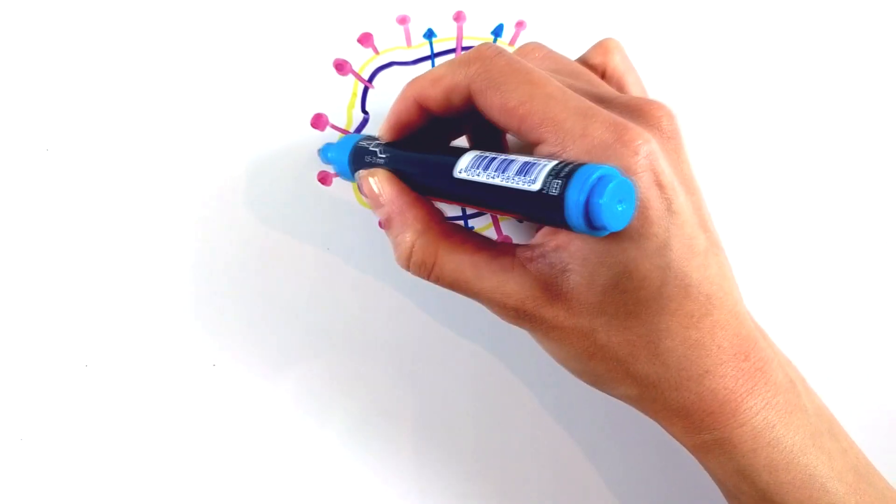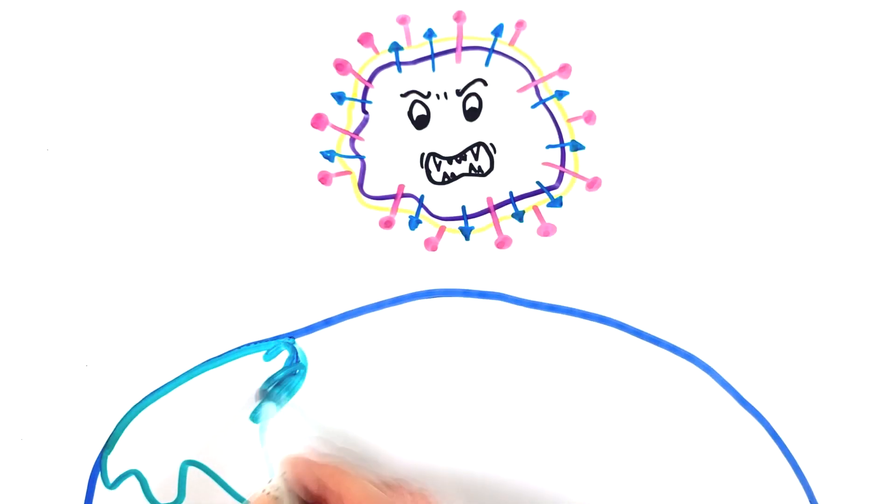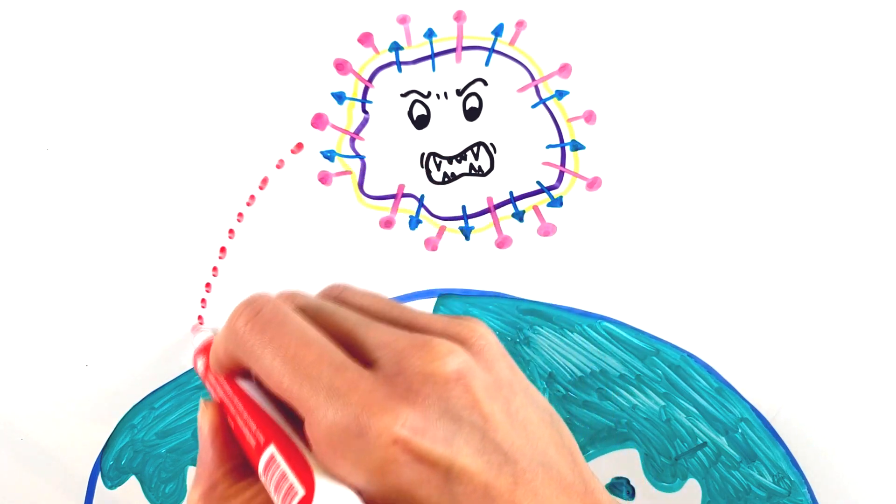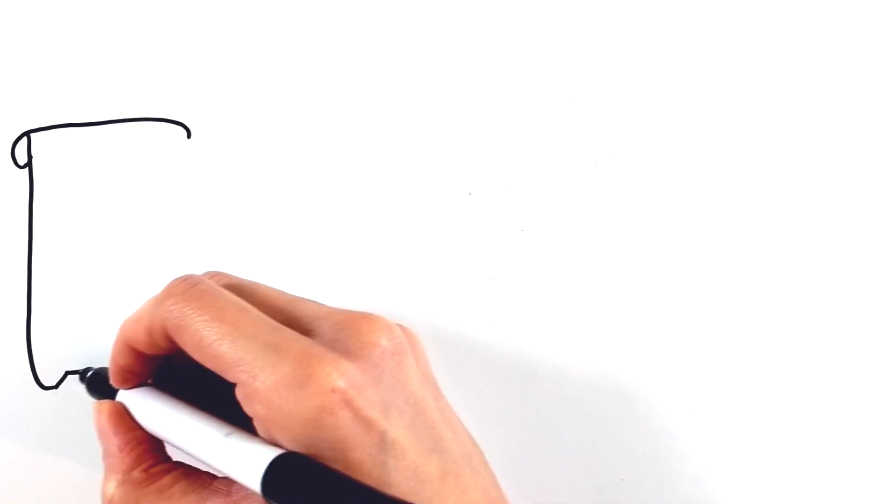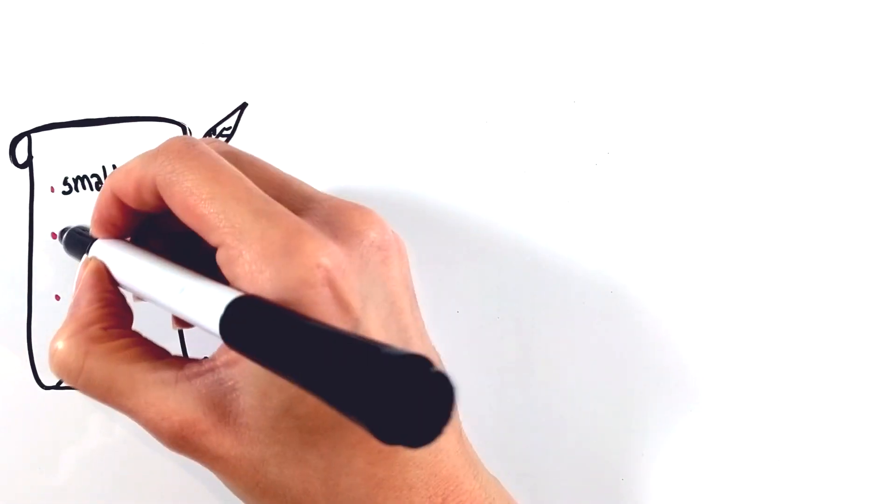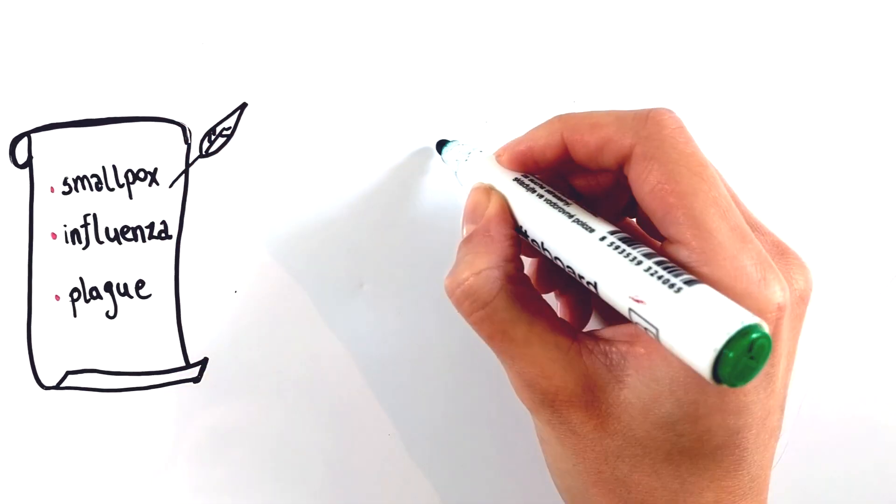A disease across a large area spanning multiple continents, a worldwide disaster affecting a global population, is called a pandemic. Throughout history, many pandemics such as smallpox, influenza, and the plague have occurred.